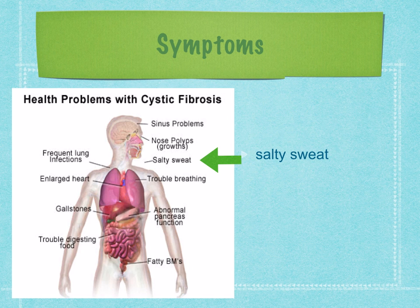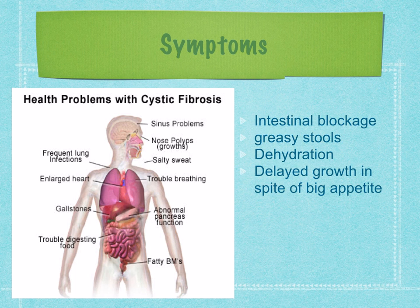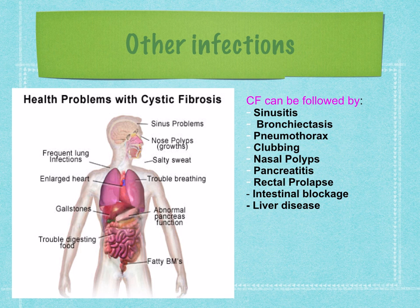A person with cystic fibrosis will have salty sweat because chloride ions cannot move out of the epithelial cells, so water will not follow. Other symptoms include intestinal blockage, greasy stools, dehydration, and delayed growth in spite of a big appetite. Cystic fibrosis can also be followed by sinusitis, where the sinuses — which produce mucus and keep the lining of the nose moist — become swollen.